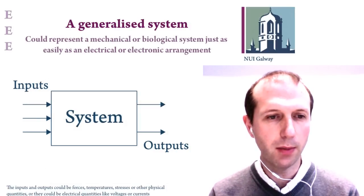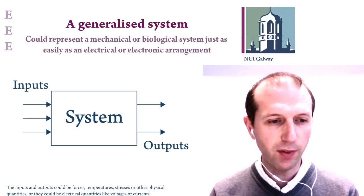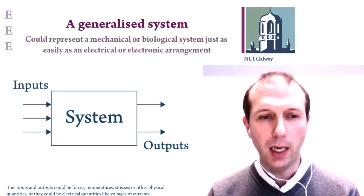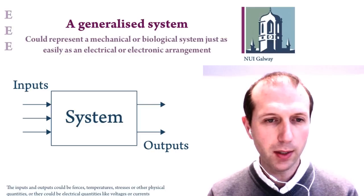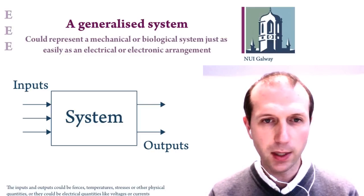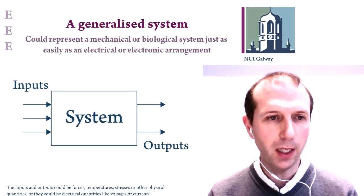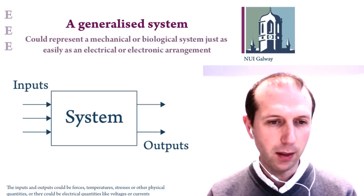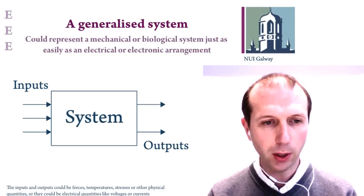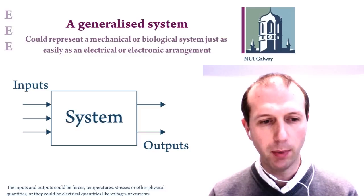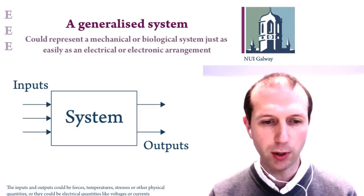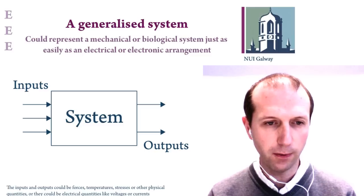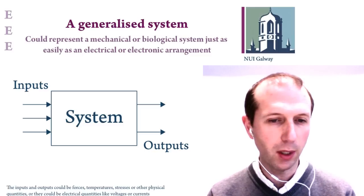A very general picture of a system is: we have a box with a set of inputs and a set of outputs. Although we're talking about electrical or electronic systems, this could equally be a mechanical system, a biological system, or any kind of engineering system. The inputs and outputs to the system could be of various types — mainly in EEE we're talking about electrical quantities like voltages and currents, but they could equally be forces, temperatures, stresses, or other physical quantities.